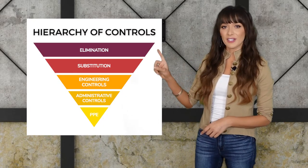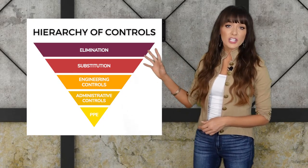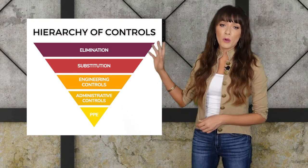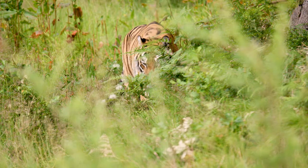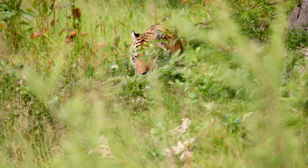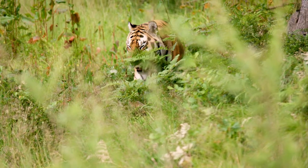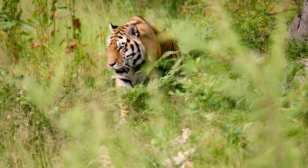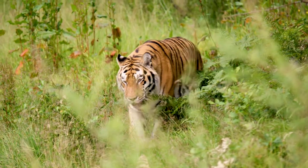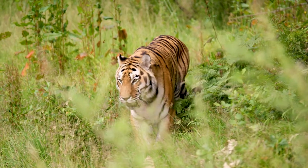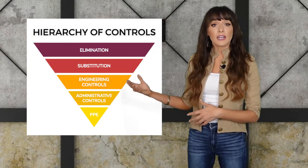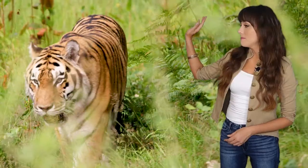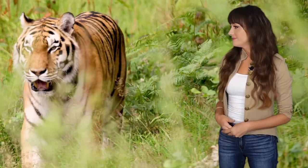Let's start with elimination. Elimination is by far the most effective way to deal with any hazard. In this case, you could decide that the tiger is just too dangerous, and your zookeepers aren't able to handle predatory animals. So you could give the tiger to a reserve in Florida. Tiger eliminated.